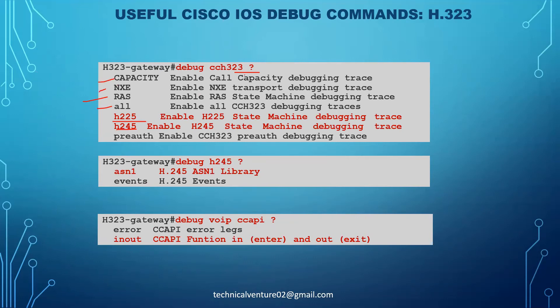For debugging, you can use 'debug cc h323 h225', 'debug cc h323 h245', or 'debug cc h323 all'. Additional commands include 'debug h245 asn1' and 'debug h245 events'. The most important troubleshooting command is 'debug voice ccapi inout' - if there is any issue with a call, this command tells you everything happening on that call.